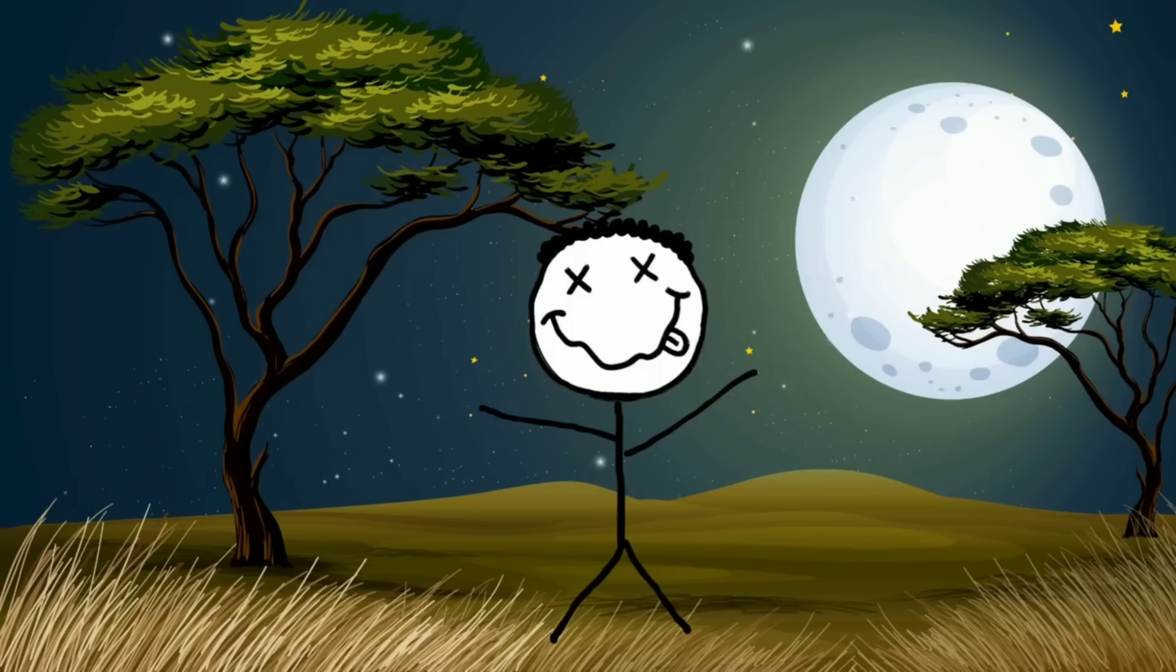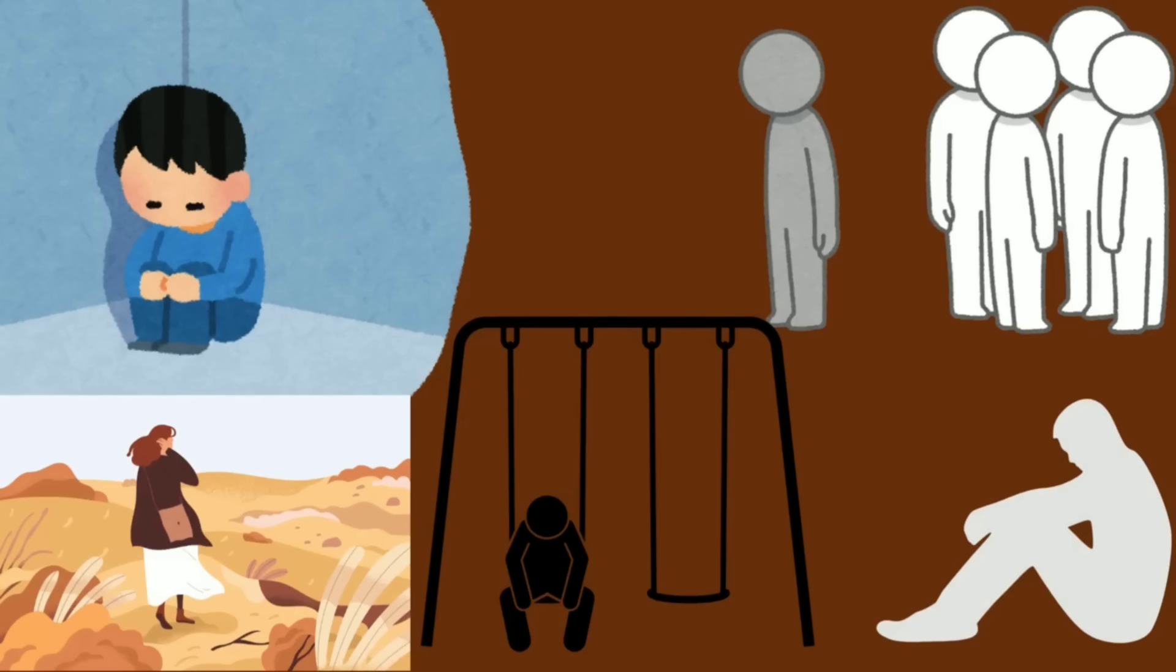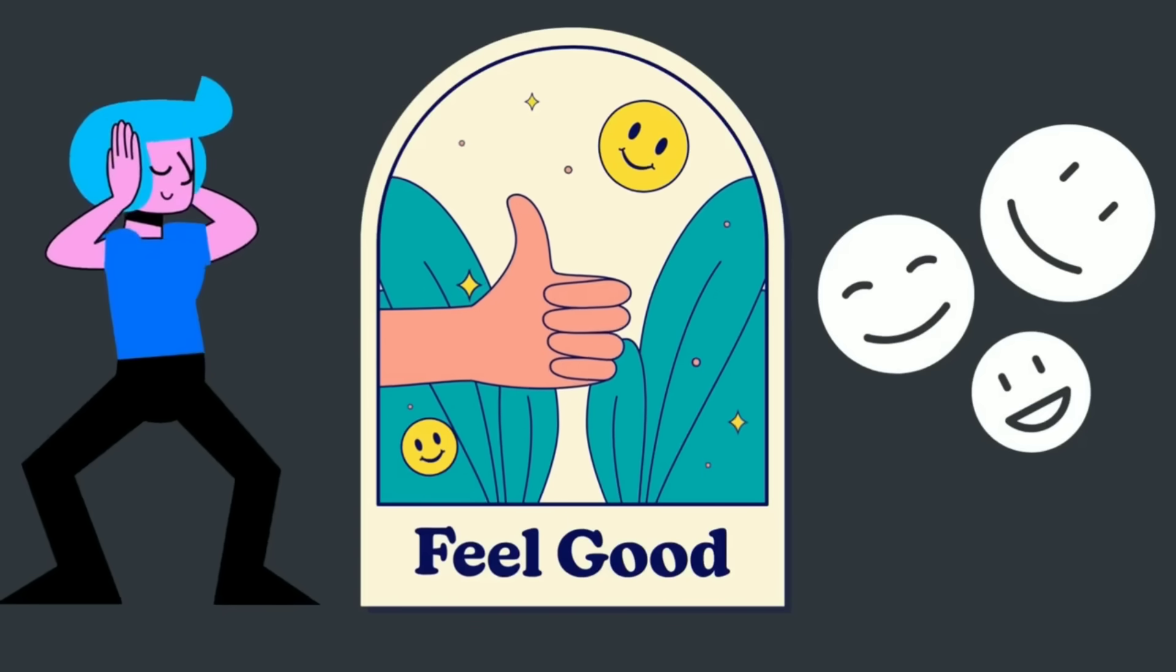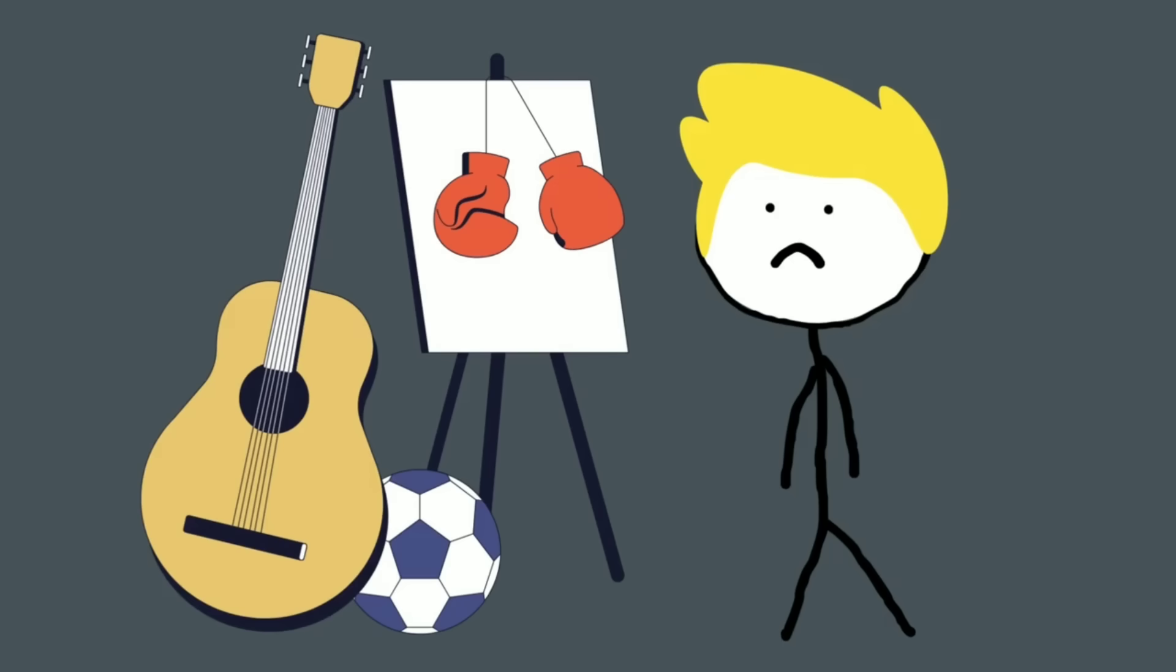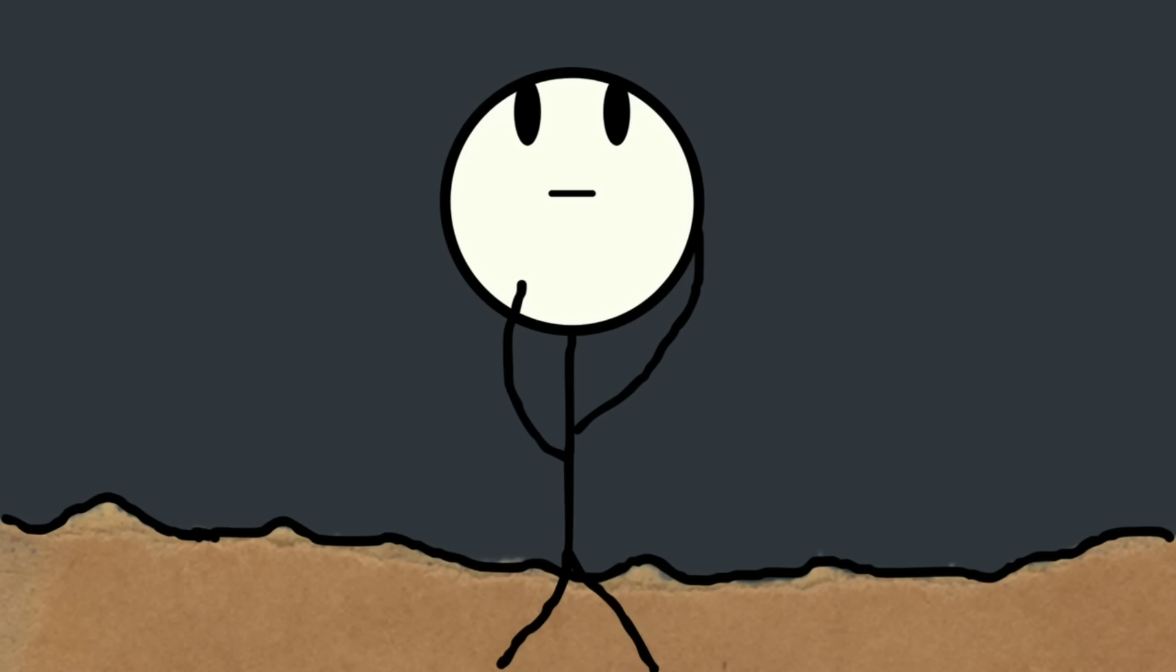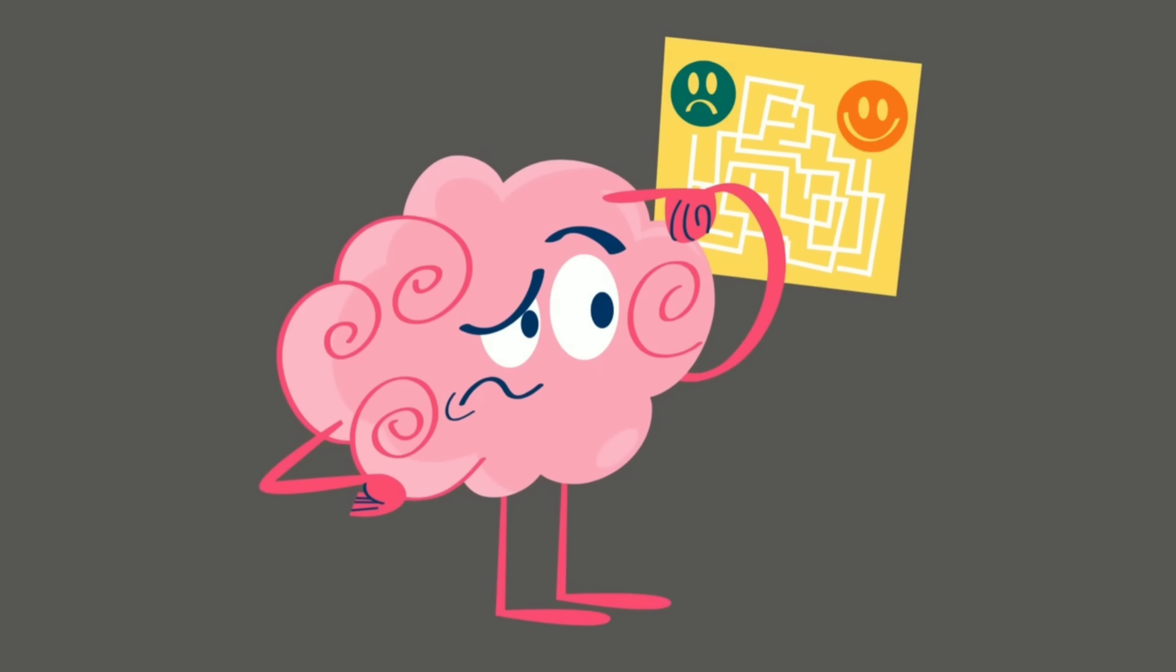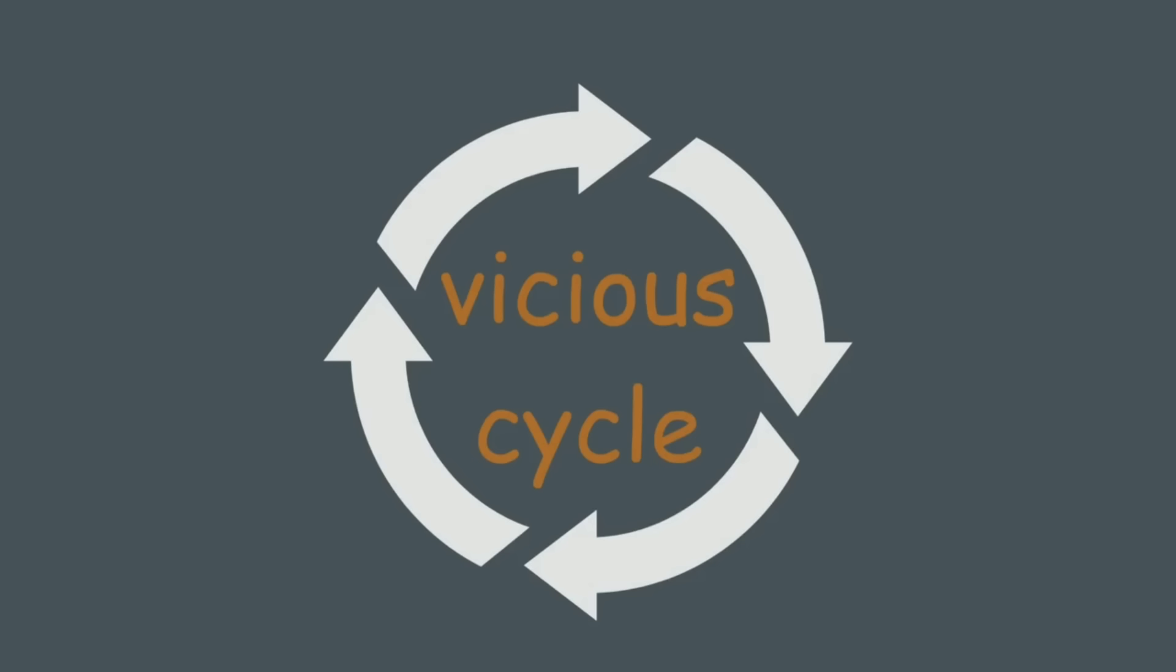The neurotransmitter that makes you feel pleasure, reward, and connection. In lonely people, dopamine circuits become underactive. Things that used to feel enjoyable—music, food, hobbies—start to feel dull or pointless. You begin to withdraw more, not because you want to, but because your brain isn't offering the chemical rewards that usually come with interaction. It's a vicious cycle.